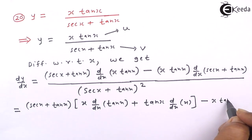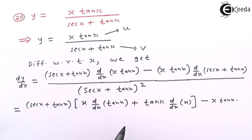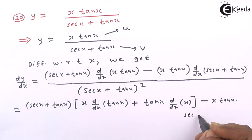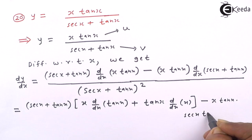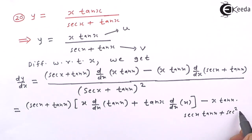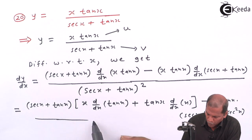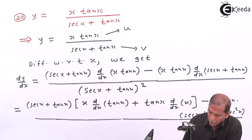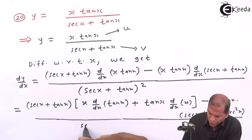Then minus x times tan(x) written as it is, into the derivative of sec(x), which is sec(x) times tan(x), plus the derivative of tan(x), which is sec²(x). The whole term is divided by sec(x) plus tan(x), the whole squared.